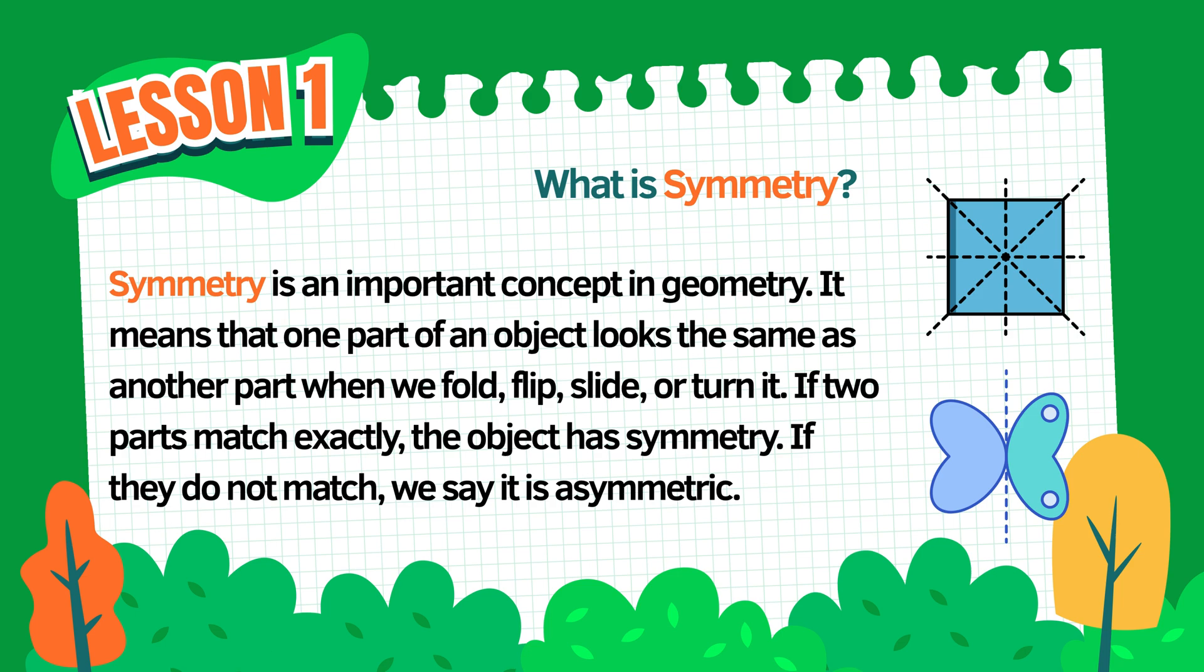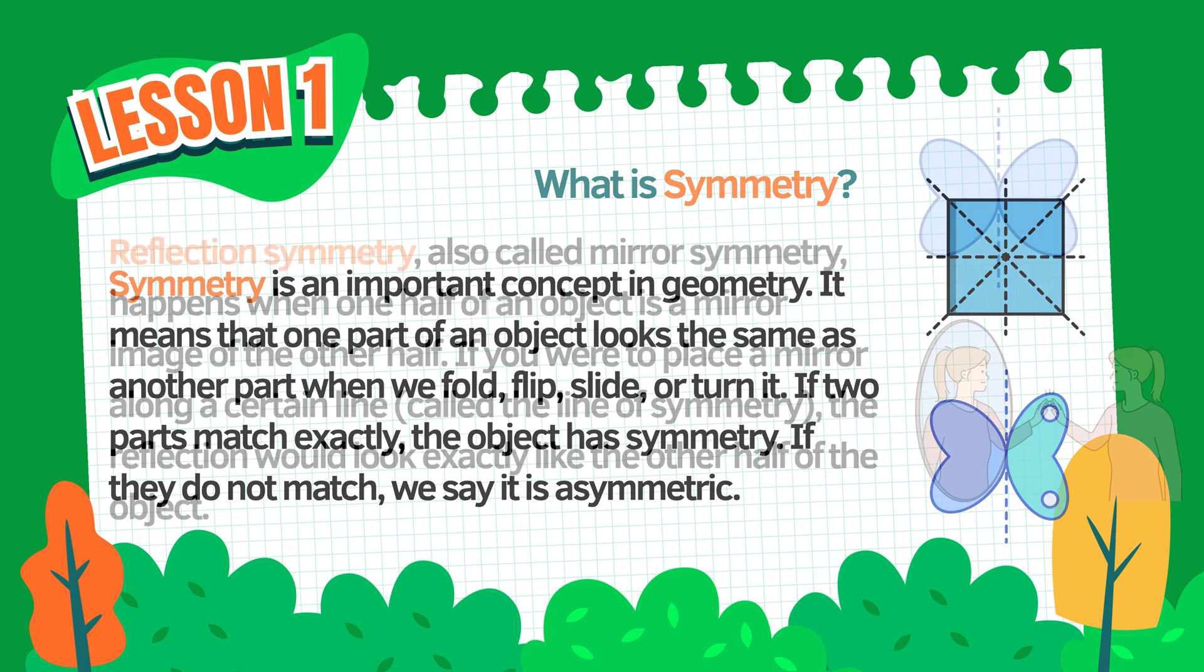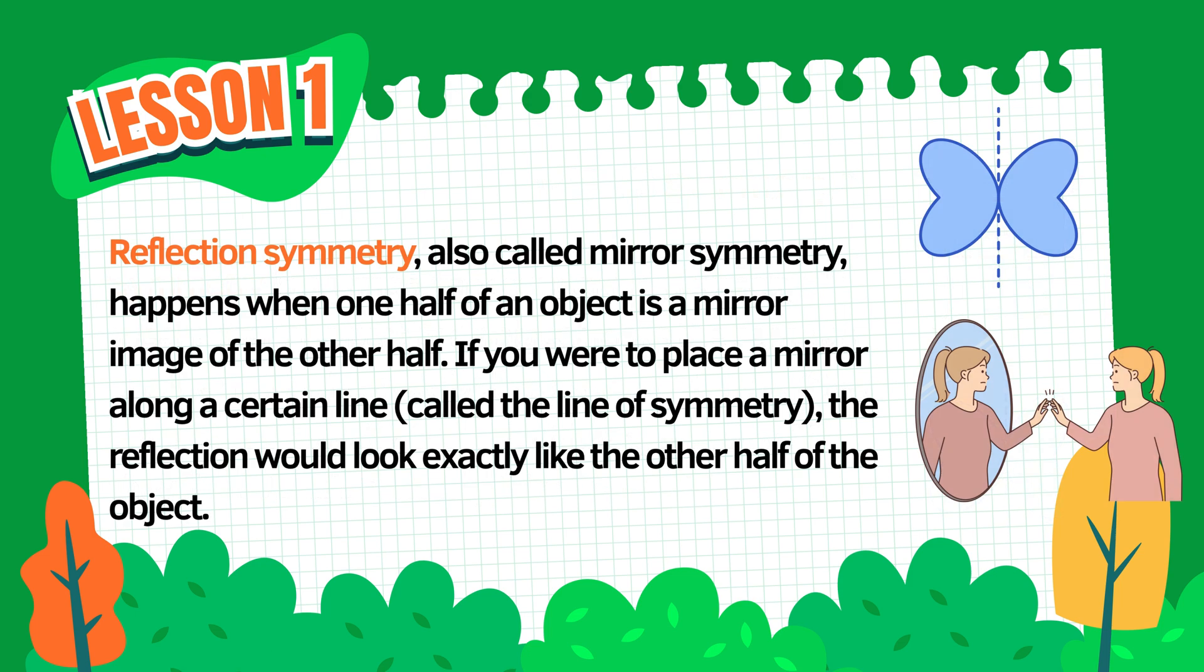Let's talk about reflection symmetry, also known as mirror symmetry. This happens when one half of an object is a mirror image of the other half.